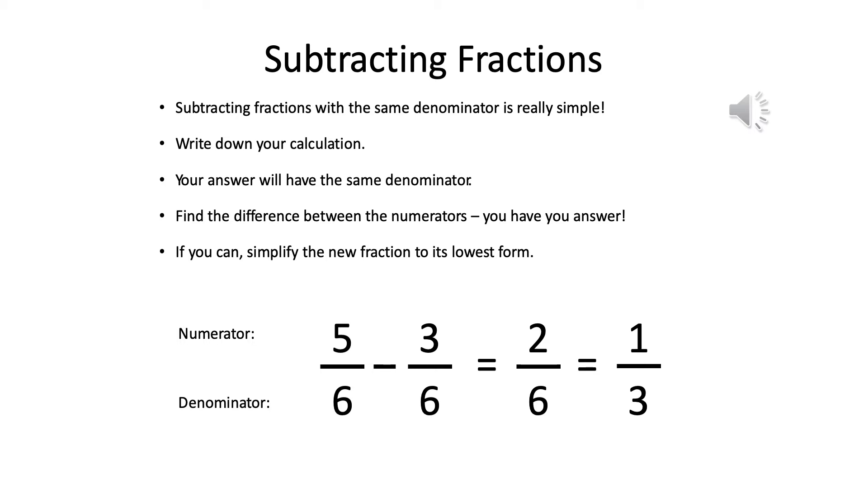If you want, you can simplify this new fraction into its lowest form by dividing. So two sixths is equivalent to one third. If you've forgotten how to simplify that, I'm not going to go into that in too much detail today. So if you can have a go, if not, don't worry. Just leave it as two sixths.